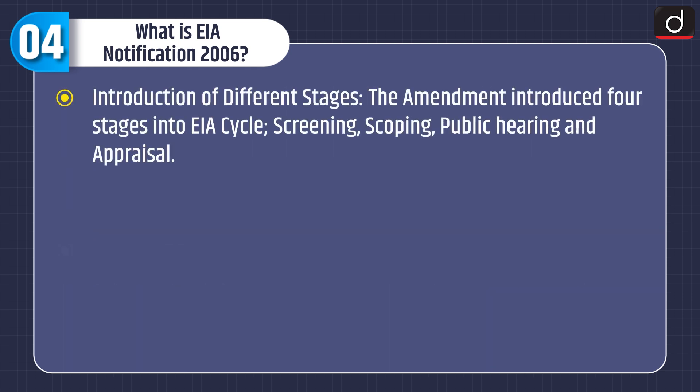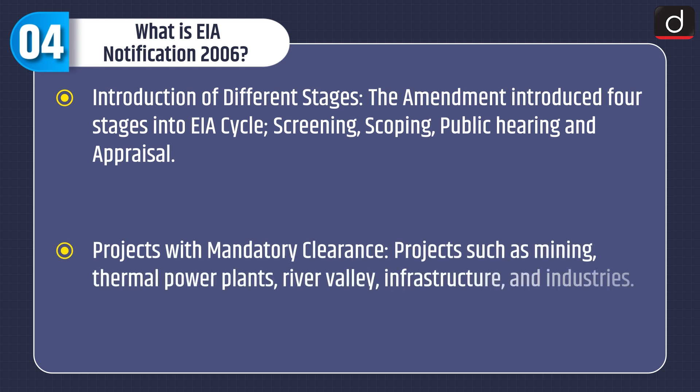The notification also introduced different stages into the EIA cycle: screening, scoping, public hearing, and appraisal. Projects requiring mandatory clearance include those such as mining, thermal power plants, river valley, infrastructure, and industries.